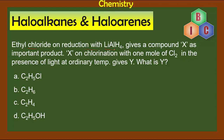Here is our question: ethyl chloride on reduction with LiAlH₄ — lithium aluminium hydride — gives a compound X as an important major product. X on chlorination with one mole of chlorine in the presence of light at ordinary temperature gives Y. What is Y? We need to find out from the four options given.